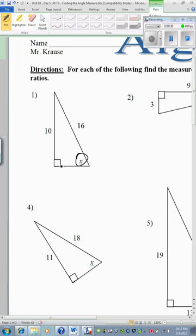So again what we're going to do is label our triangle. We're going to label it with hypotenuse, this is my opposite, and there's my adjacent.